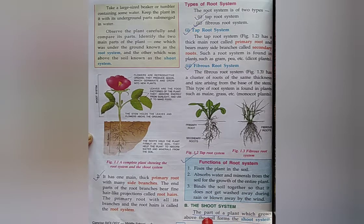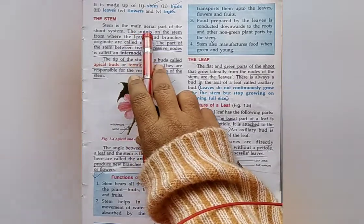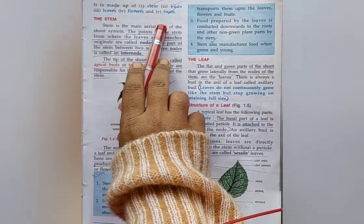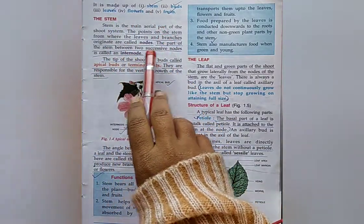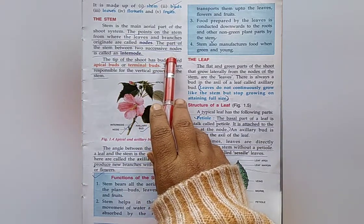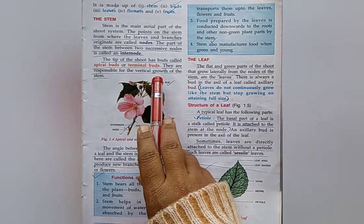What is shoot system? The part of a plant which grows above the soil forms the shoot system. Write down the parts of shoot system: Stem, buds, leaves, flowers, and fruits. What are nodes? The points on the stem from where the leaves and branches originate are called nodes.